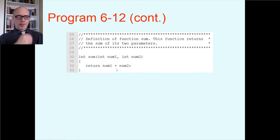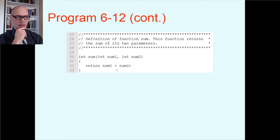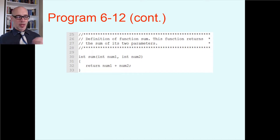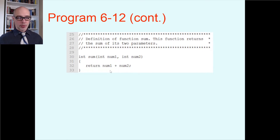You can have a complicated expression after return — beginning programmers sometimes think return can only have one single variable after it. But you're not restricted like that. You can put any kind of math expression there, kind of like an assignment statement. The processor will compute it and whatever the result is, that's what gets returned out of the function. Notice you don't need parentheses for that — it's not a function call.